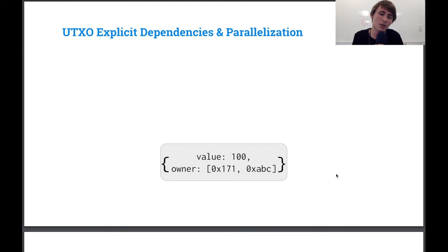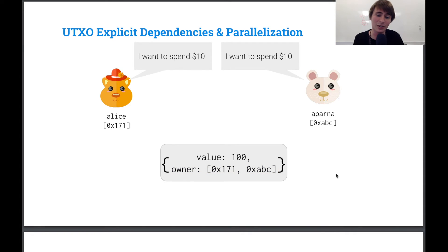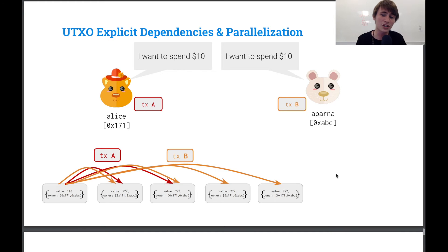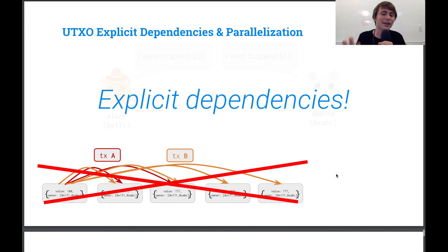So this is a little bit trickier when you have two owners of the same UTXO, let's say Alice and Aparna, and they both want to spend that UTXO or some portion of that UTXO, they generate transactions that conflict with one another, and we have to throw one of those transactions out. So you can get a little bit of annoying transactions getting invalidated. So explicit dependencies, they're pretty cool.